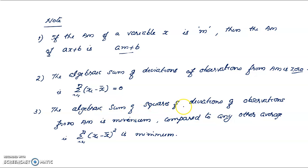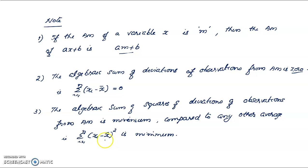The last property: the algebraic sum of squares of deviations of observations from the arithmetic mean is minimum compared to any other average. That is, Σ(xi − x̄)² is minimum. If we compute the sum of squared deviations about any other value, it will always be greater than or equal to the sum about the arithmetic mean.